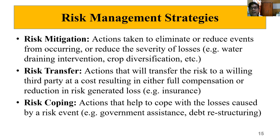Risk transfer: the farmer can transfer the risk to a willing third party — by insurance. You can insure your crops, so if there is any crop failure due to production risk, you can claim your loss. Then risk coping: apart from that, the farmer can also ensure he will get some help from government sources — some assistance to cope with risks. For example, if there is monsoon failure, the government can provide assistance to help the farmer cope.